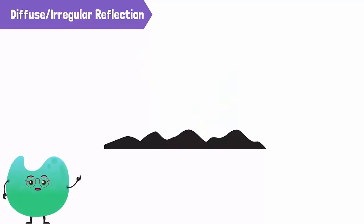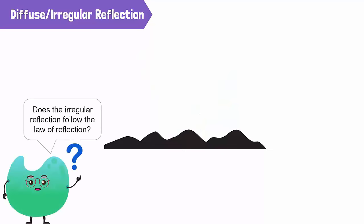Here comes a question: does irregular reflection follow the law of reflection of light? Is the angle of incidence equal to the angle of reflection when light falls onto a rough surface?